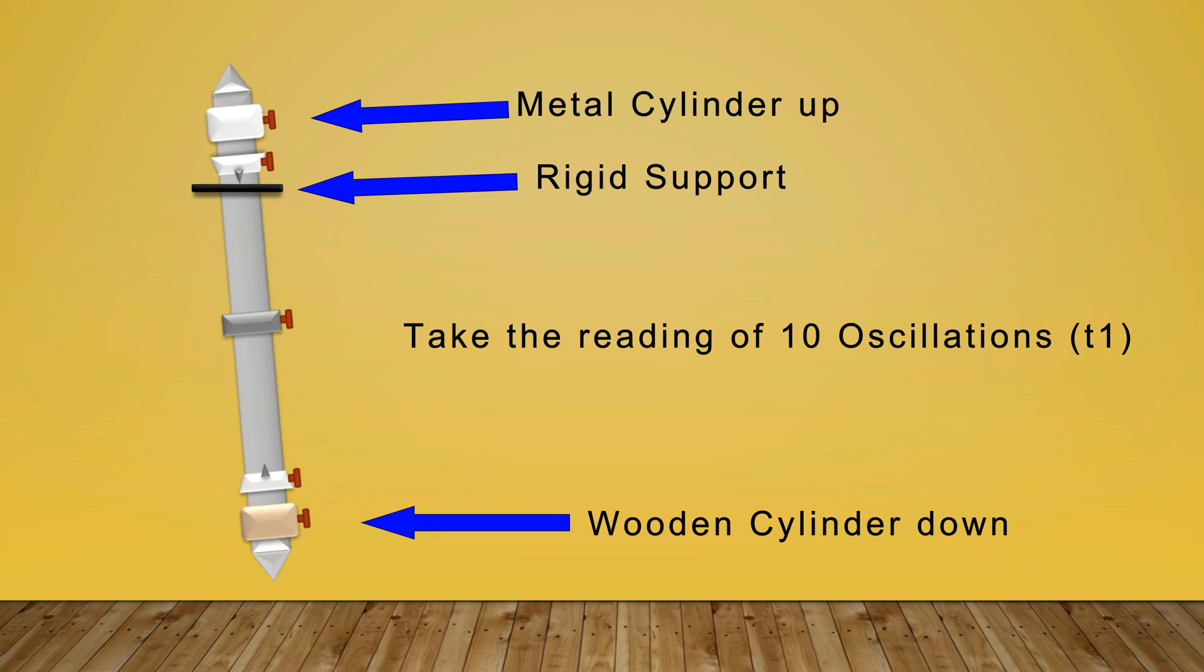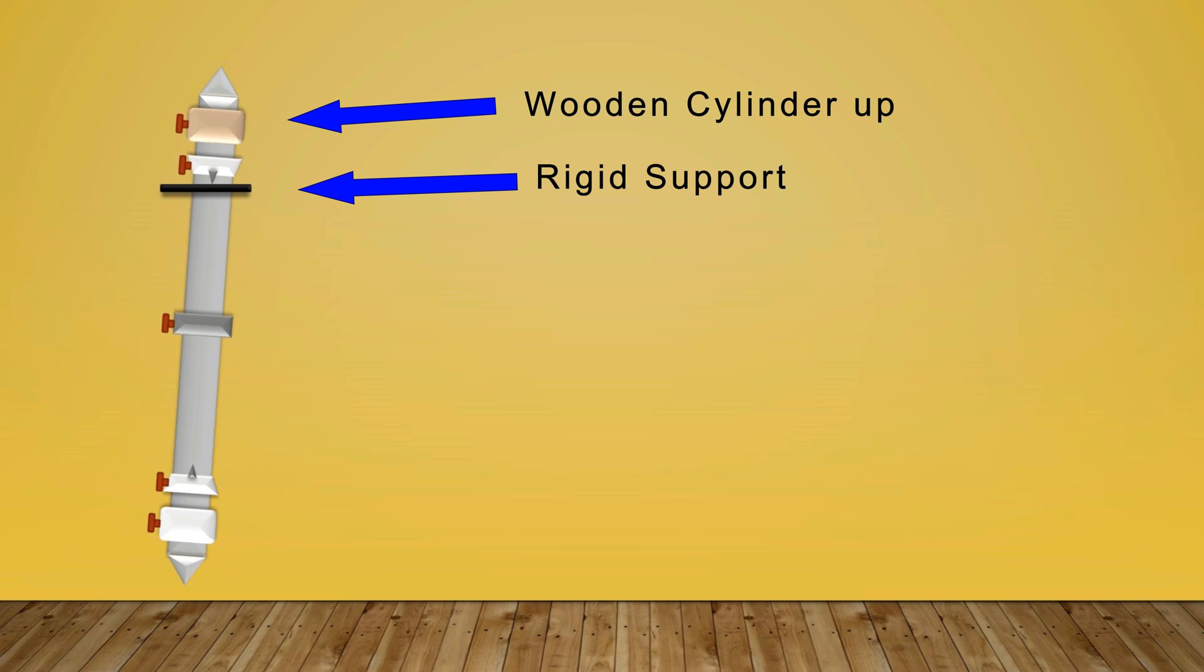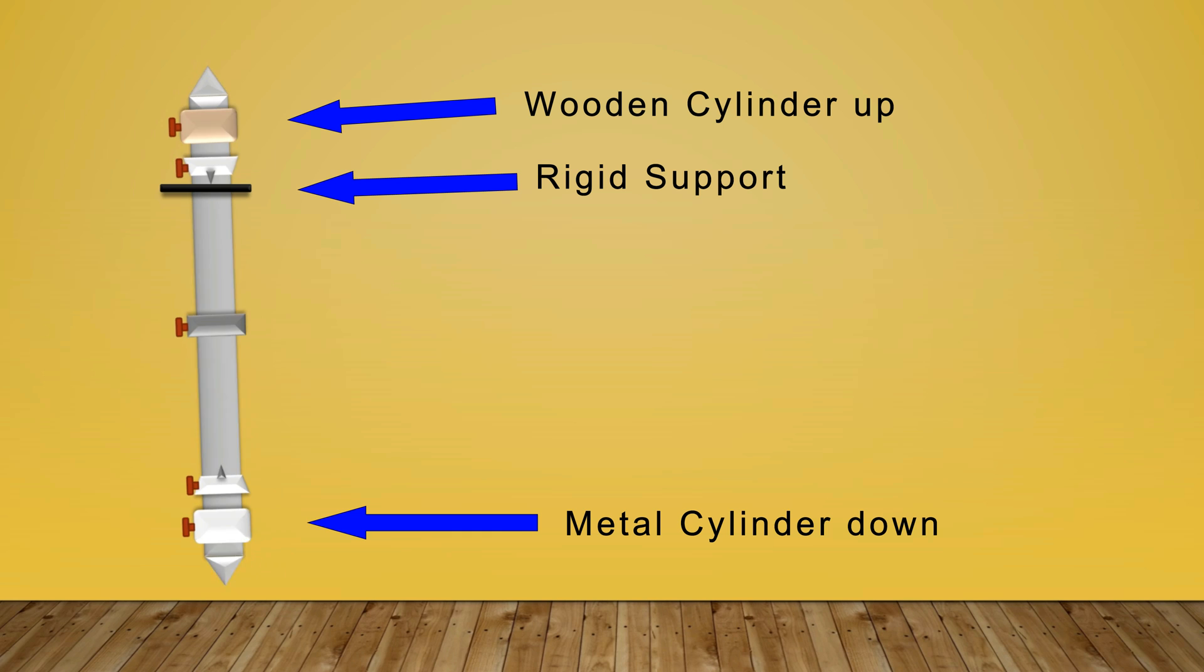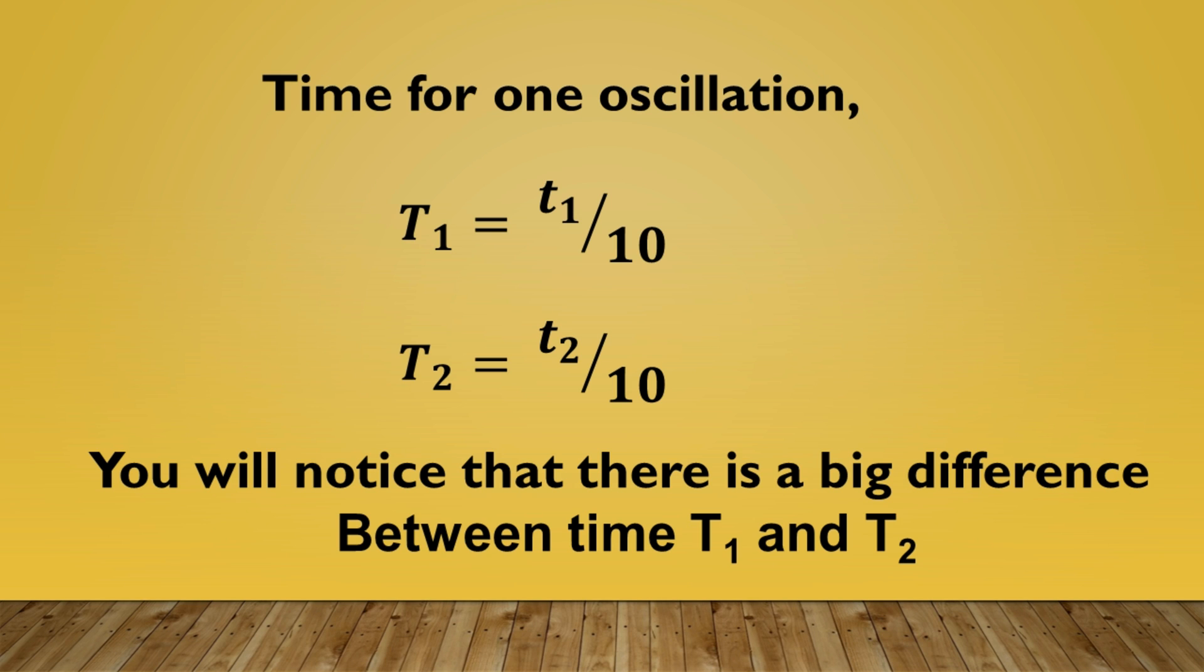Now turn this Kater's pendulum upside down. When the wooden cylinder is upside and metal cylinder is downside, take this time of 10 oscillations as T2. Now you can divide this time by 10 and get the time for one oscillation. So in this way, you can get another quantity T1 and T2 as the time period of one oscillation.